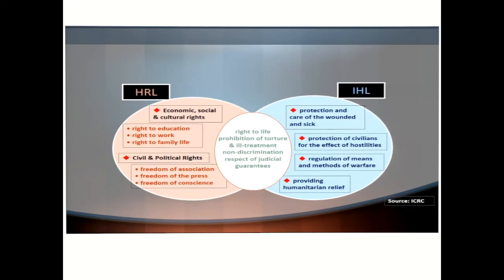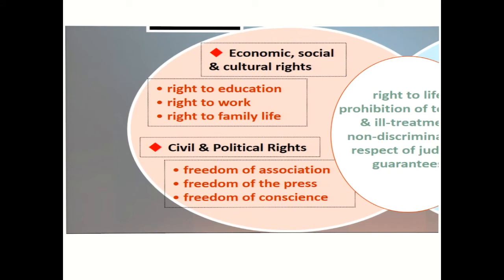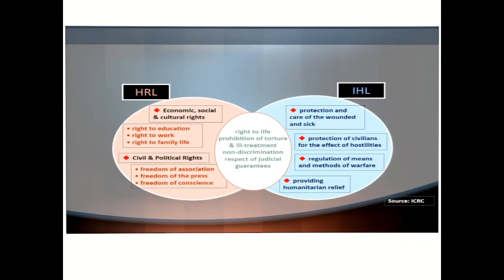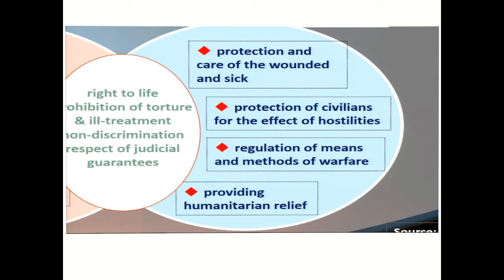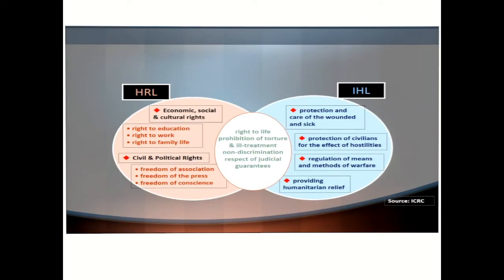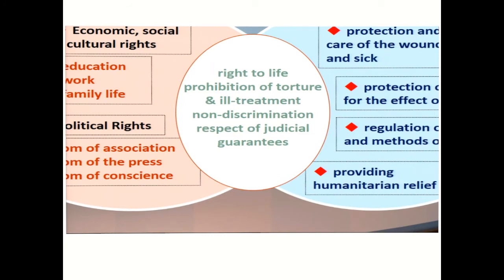Under human rights law, we have economic, social, and cultural rights, right to education, right to work, and right to family life. We also have civil and political rights, like freedom of association, freedom of the press, and freedom of conscience. Under international humanitarian law, we have protection and care of the wounded and sick, protection of civilians from the effect of hostilities, regulation of means and methods of warfare, and provision of humanitarian relief. Both laws work together in terms of protection, prohibition of torture and ill treatment, non-discrimination, and respect of judicial guarantees.